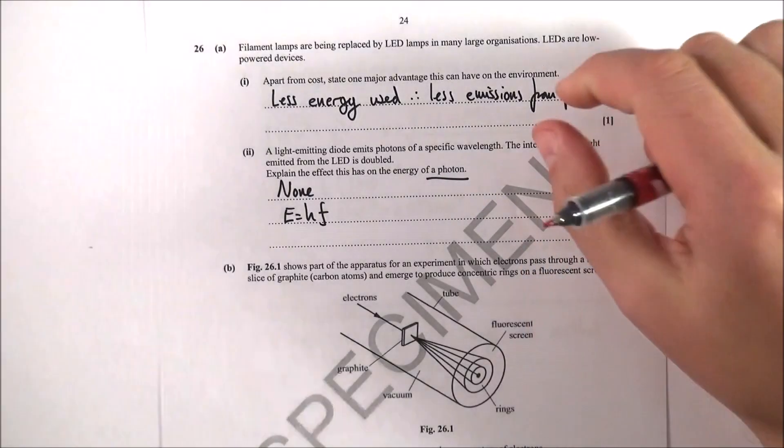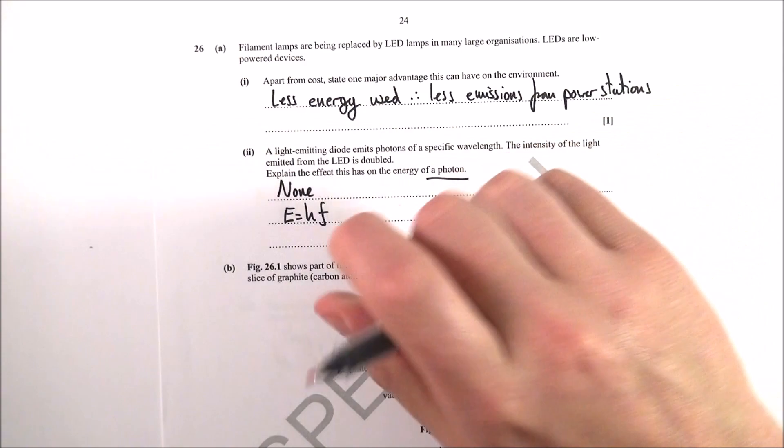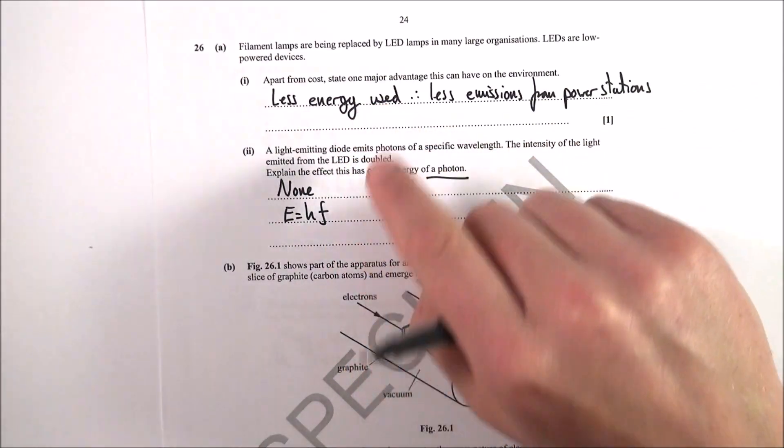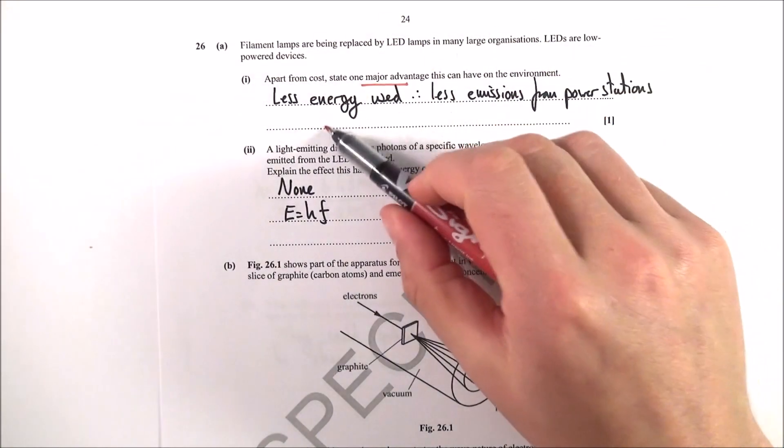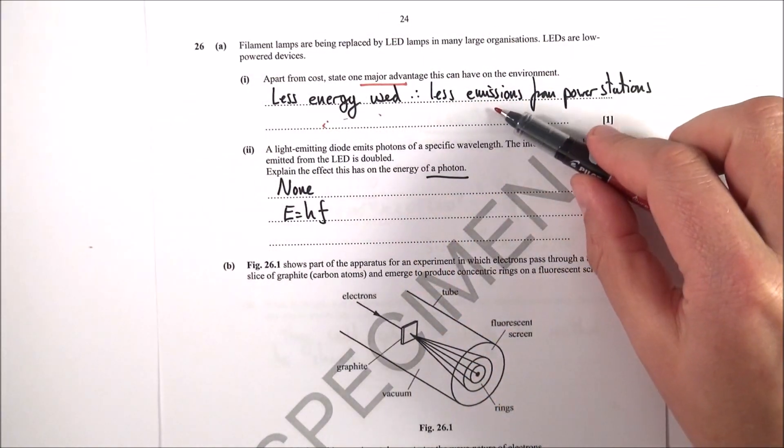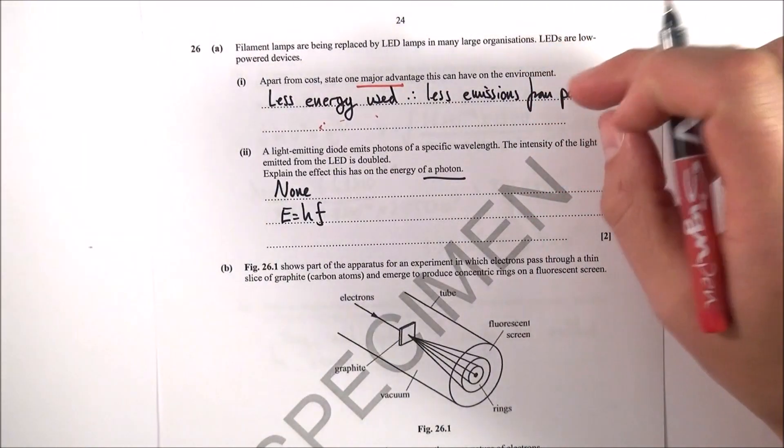The last question isn't necessarily the hardest—it just has some hard bits towards the end. It starts with something about LEDs: why are they good and what advantage do they have for the environment? Well, if they use less energy, that means less emissions from power stations, so fewer greenhouse gases like CO2.